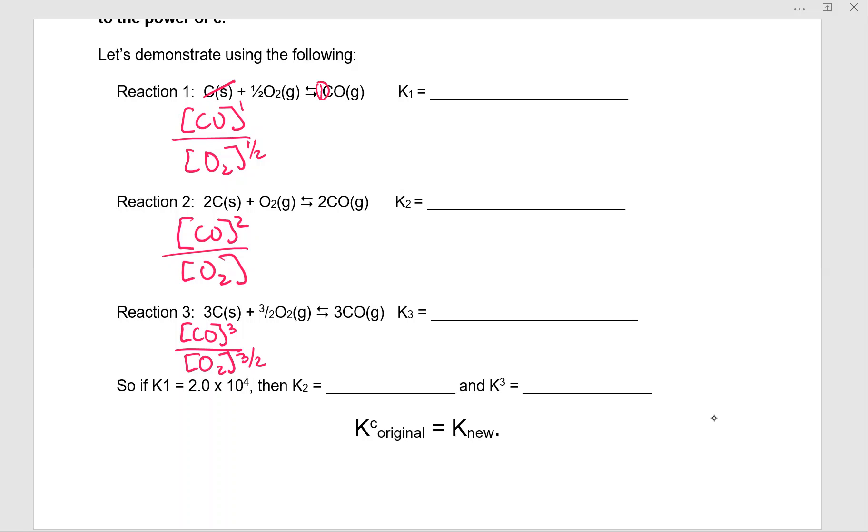So then K2. Let's just plug this in. So K1 is 2.0 times 10 to the fourth. So K2 must be 2.0 times 10 to the fourth squared. So K3 must be 2.0 times 10 to the fourth cubed.